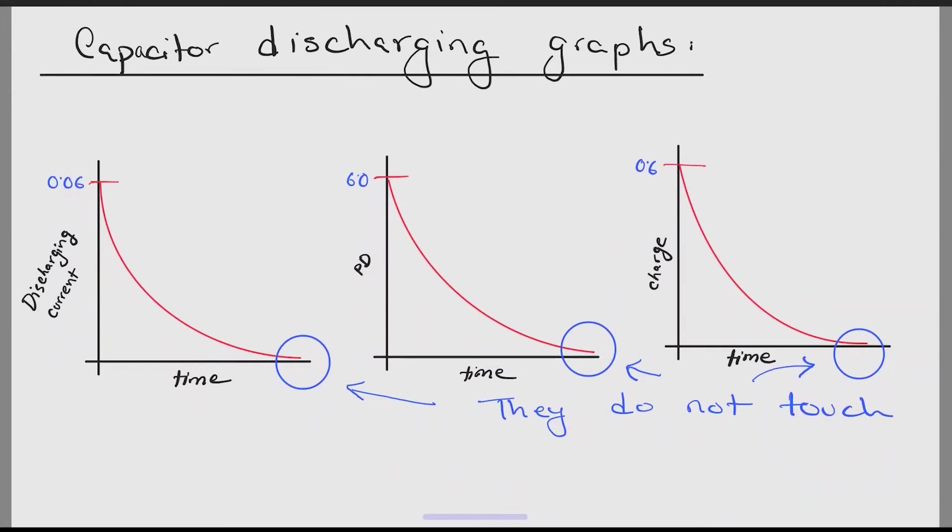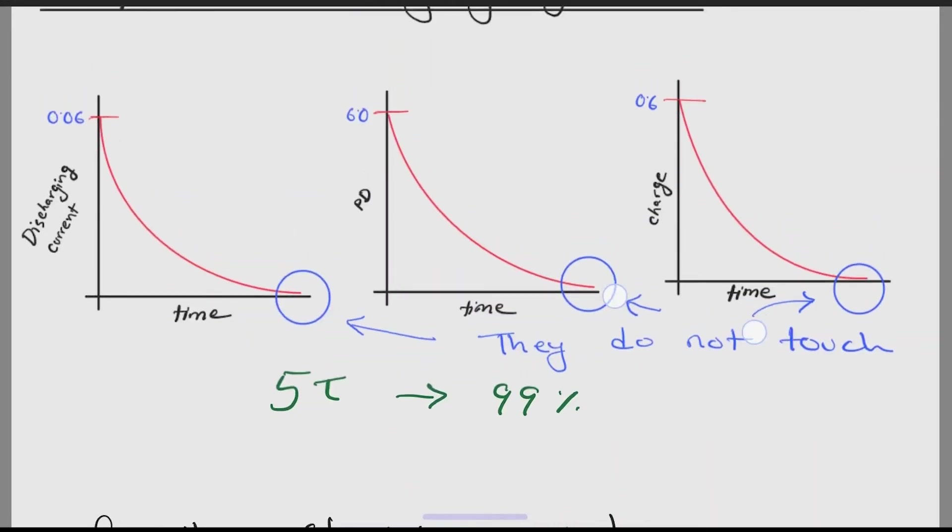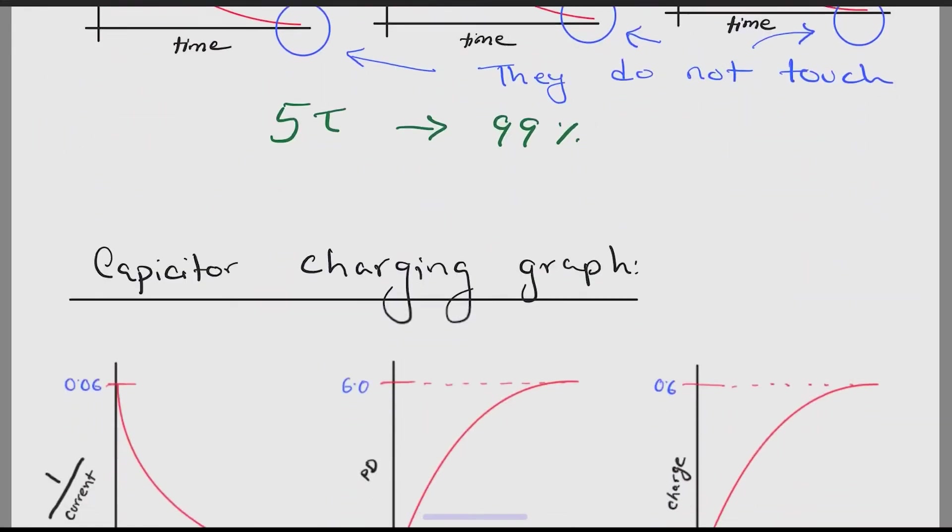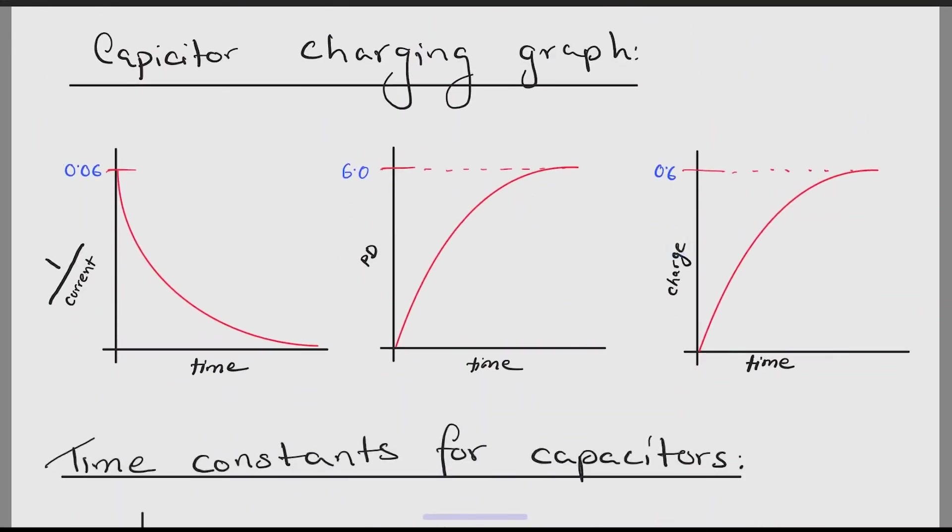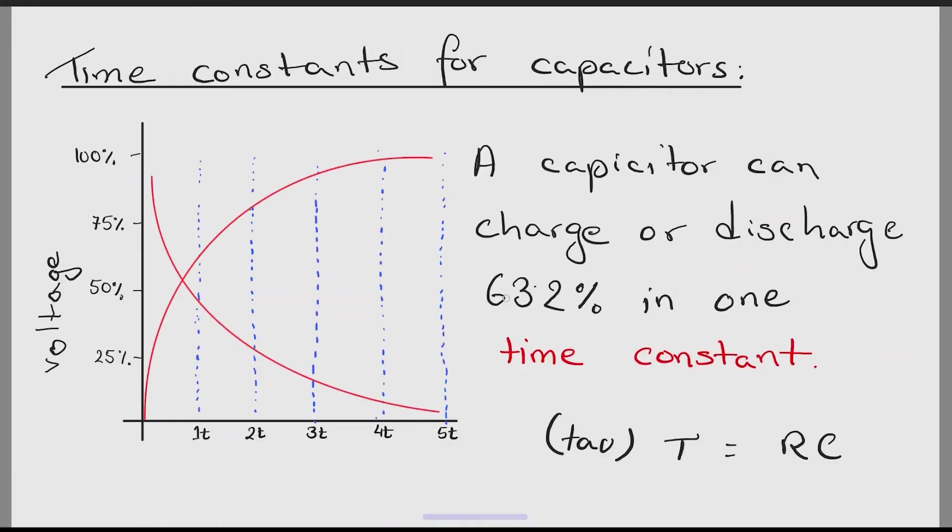These are the important capacitor discharging graphs. At about 5 time periods they discharge 99%. That is why the graphs do not touch the x-axis yet. Moving on, this is the capacitor charging graph. These six graphs are very important.